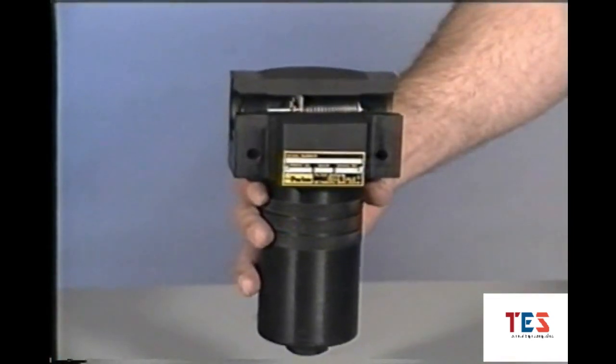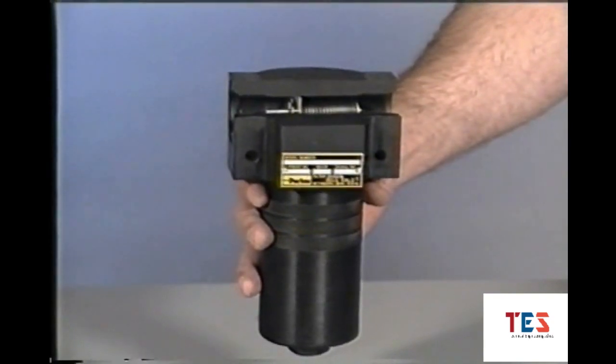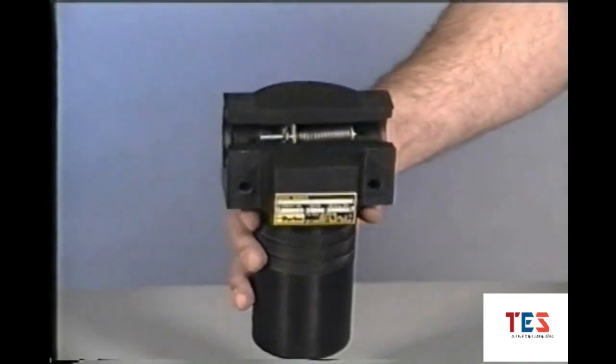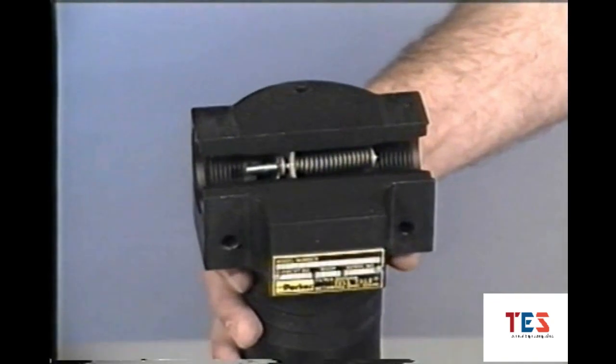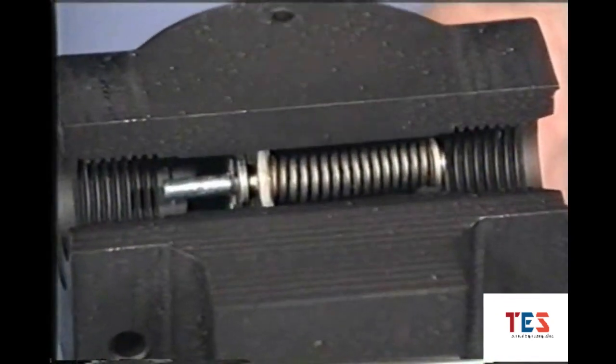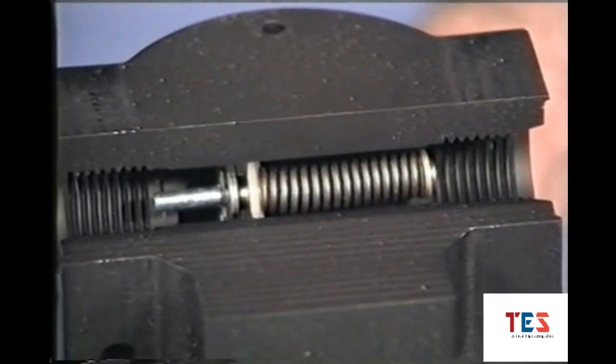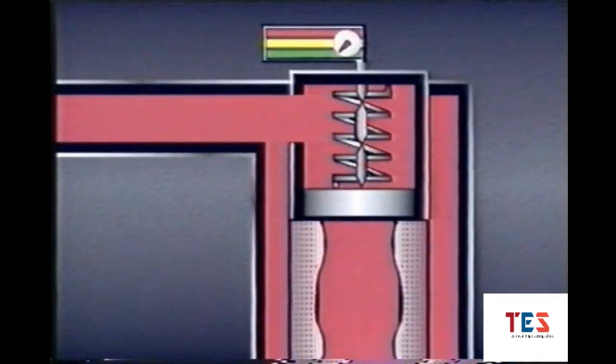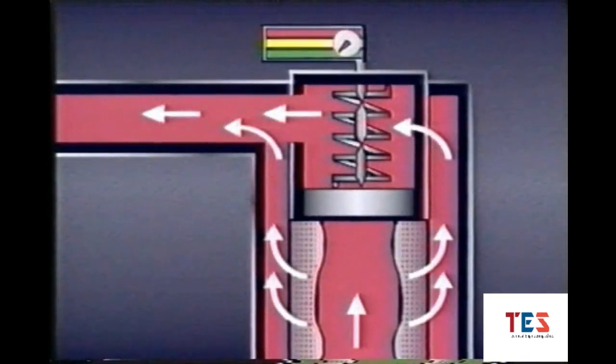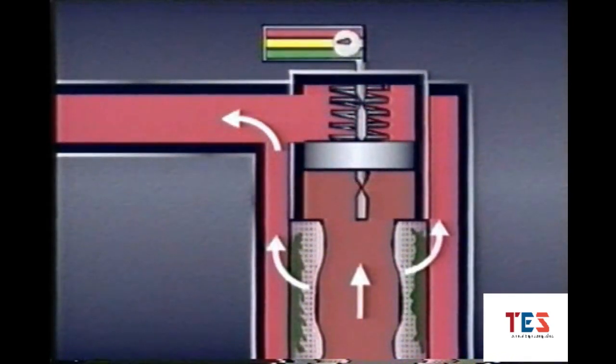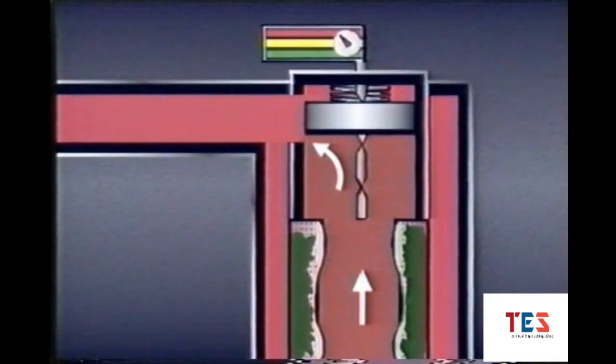To prevent this from happening, suction, pressure, and return line filters may include a bypass valve, usually a spring-loaded piston. The spring may be changed depending on what bypass pressure is desired. As the filter gets dirty, the pressure differential across the filter becomes larger. As the piston moves up, it compresses the spring. When the differential is great enough, the piston moves up far enough to allow all the fluid to bypass the filter. These filters will continue to bypass fluid until the element is cleaned or replaced.